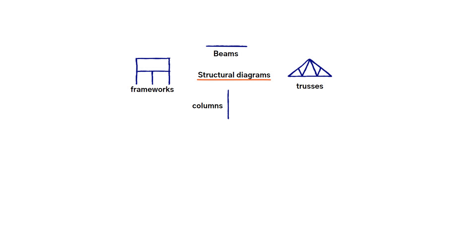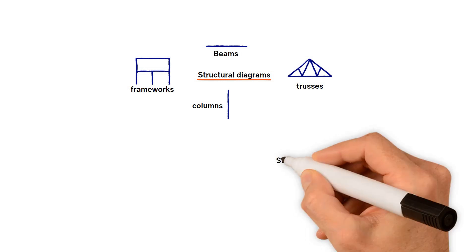But these diagrams do not show how the elements are joined together or how they are joined to their supports. To aid the process of using structural concepts, structural designers have evolved standard names and symbols for the different types of structural joints.